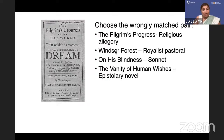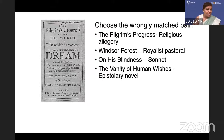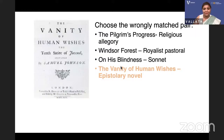Choose the wrongly matched pair: 'The Pilgrim's Progress' — a religious allegory, yes. 'Windsor Forest' — a royalist pastoral, yes. 'On His Blindness' — a sonnet by Milton, yes. 'The Vanity of Human Wishes' — an epistolary novel, NO — it is a Juvenalian satire by Samuel Johnson. So the wrongly matched pair is 'The Vanity of Human Wishes'.